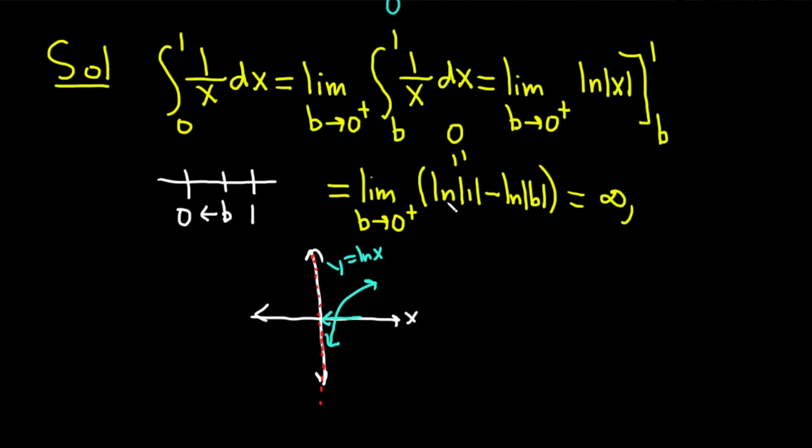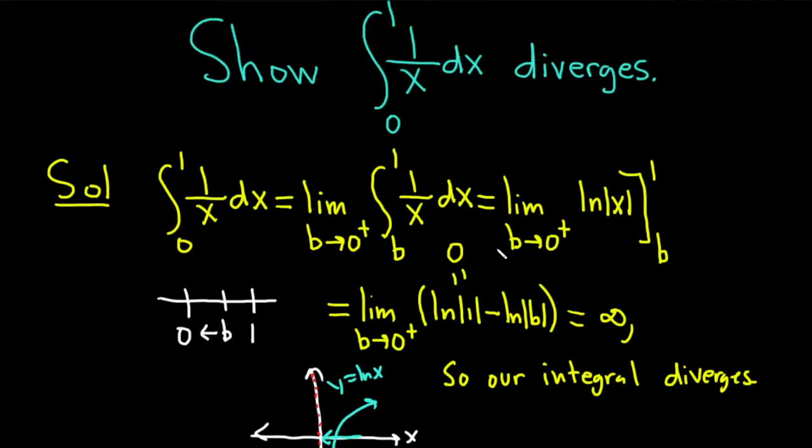So whenever you have an integral, and it's equal to infinity, negative infinity, or does not exist, we say it diverges. So our integral diverges. If we had gotten a number, then we would say it converges. But the question was asking us to show that it diverges.